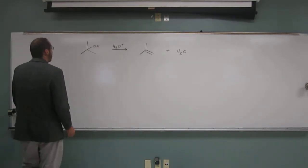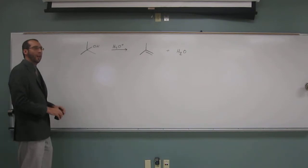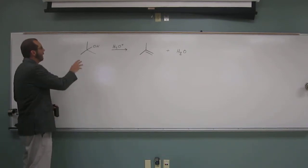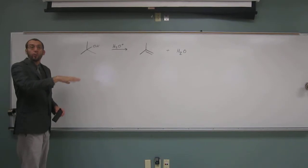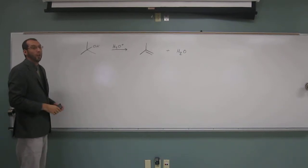And so what's going to happen? When we protonate that tertiary alcohol, we're going to get the leaving group leaving and we'll get a tertiary carbocation. And that's why it'll be an E1.